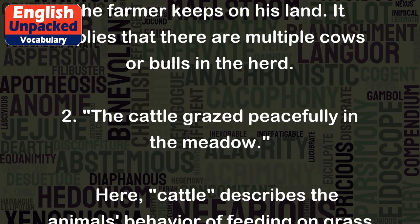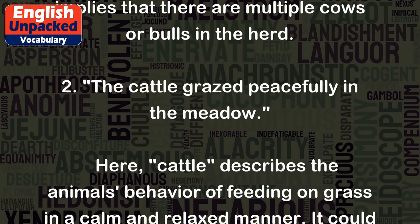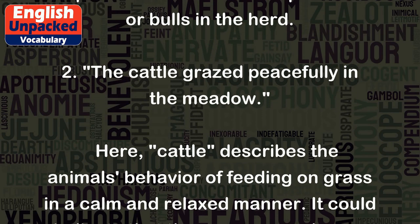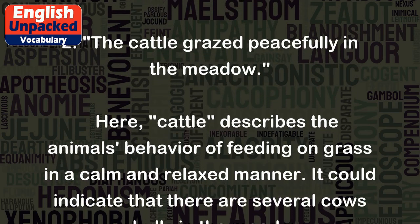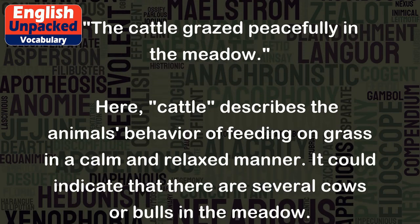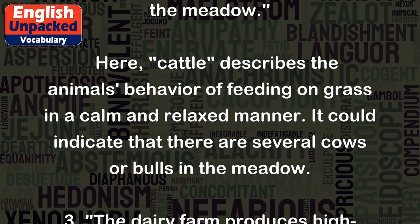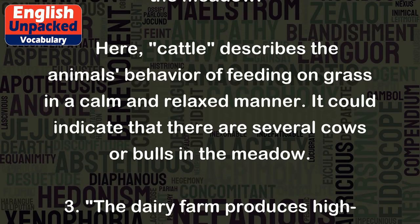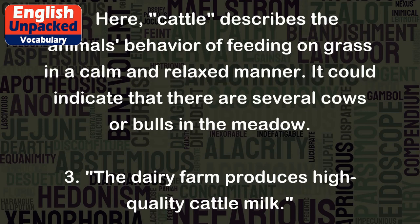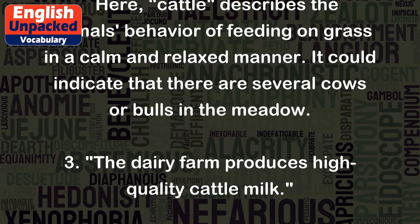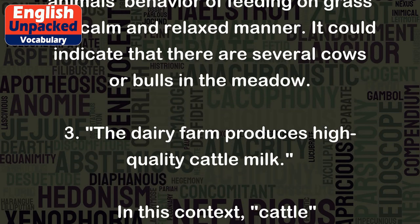2. The cattle grazed peacefully in the meadow. Here, cattle describes the animal's behavior of feeding on grass in a calm and relaxed manner. It could indicate that there are several cows or bulls in the meadow.